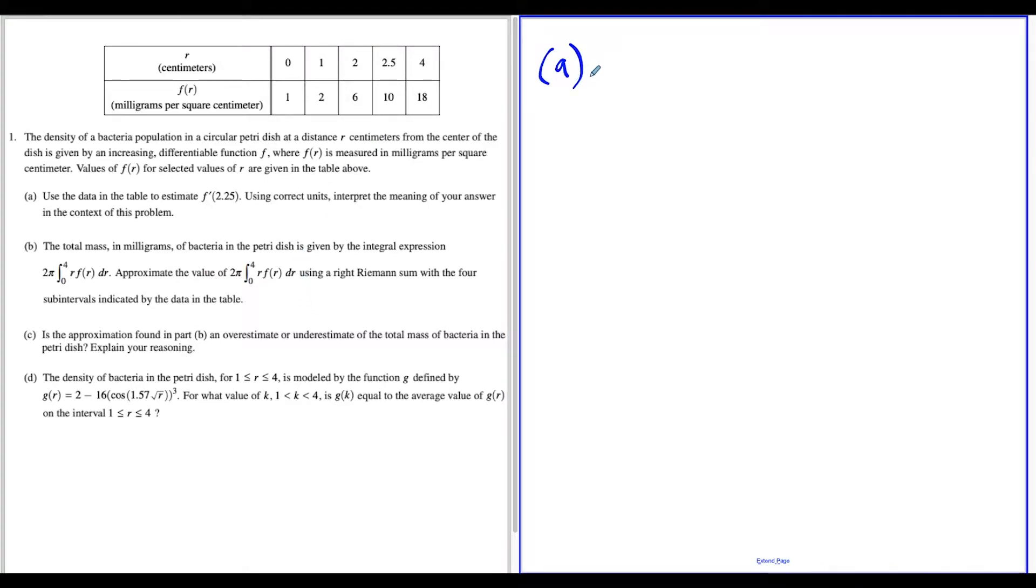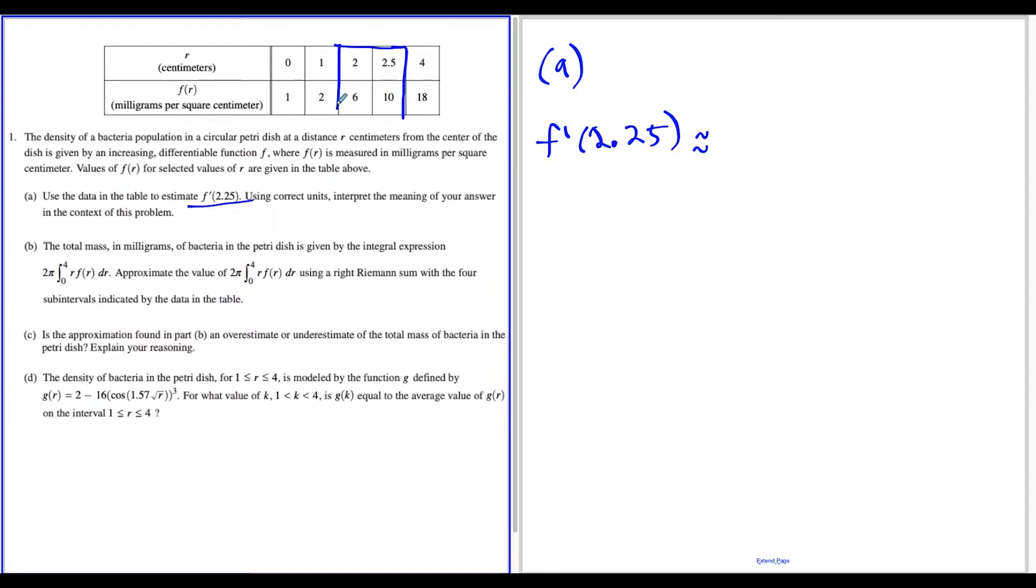For this density question, the first thing we want to do is approximate f prime of 2.25. To do this, we use the idea that the derivative tells you the slope of a function at a particular point. We have to get very close to 2.25, which is between 2 and 2.5, so we'll use these two points from the table.